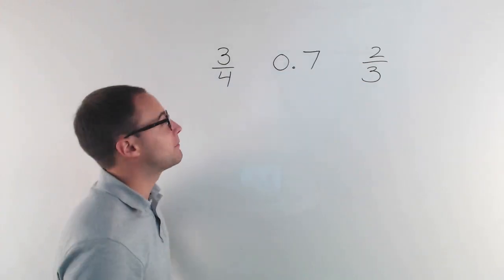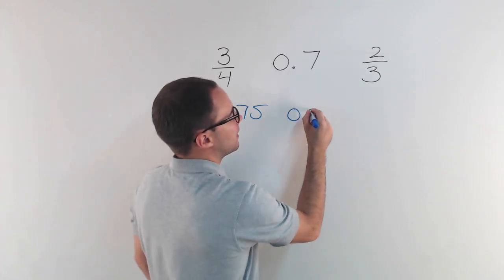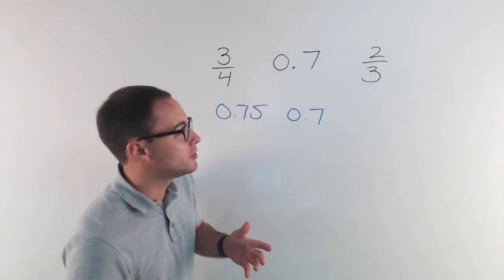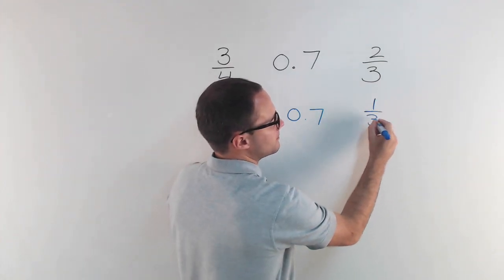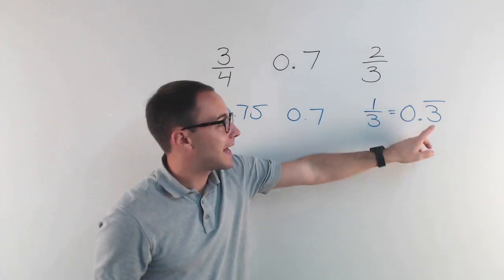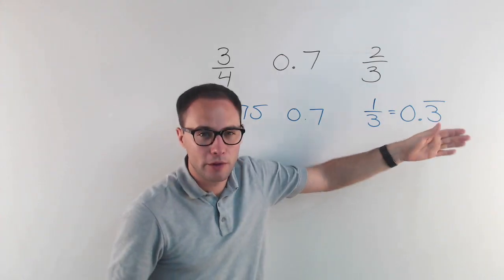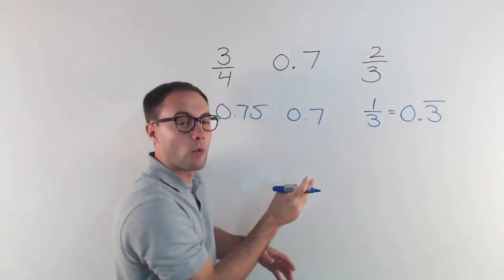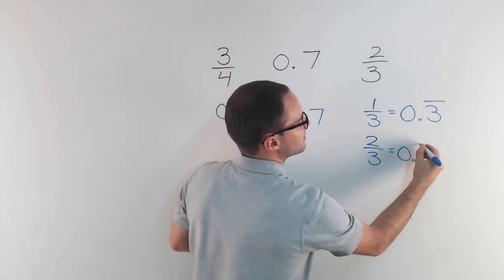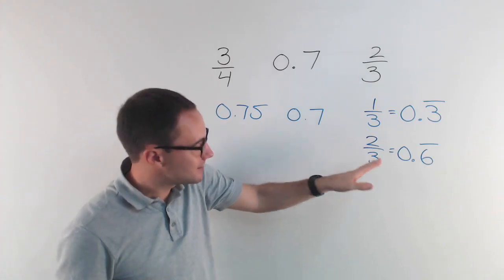Three-fourths as a decimal — hopefully you have that memorized — that's just 0.75. 0.7 is already good. And then two-thirds — it's a good thing to have memorized if you don't. Hopefully you know one-third, that's 0.3 repeating. That line means that digit repeats over and over again an infinite amount of times, so 0.33333 forever.